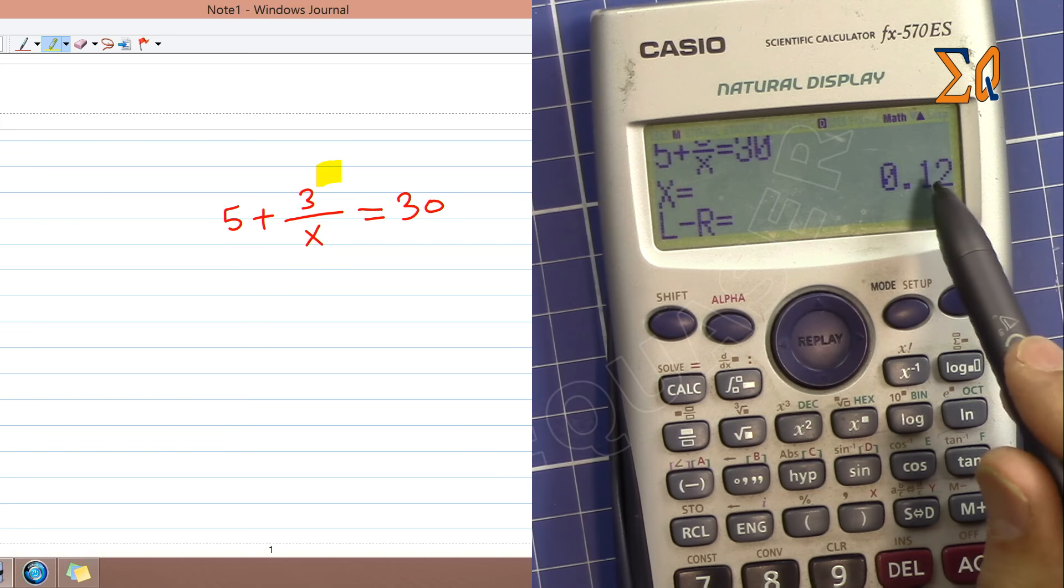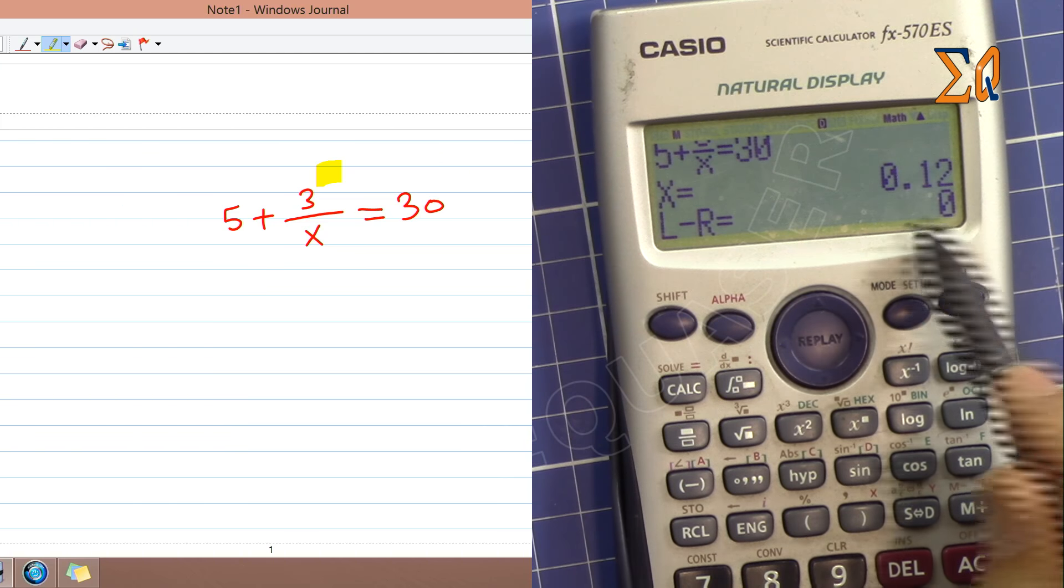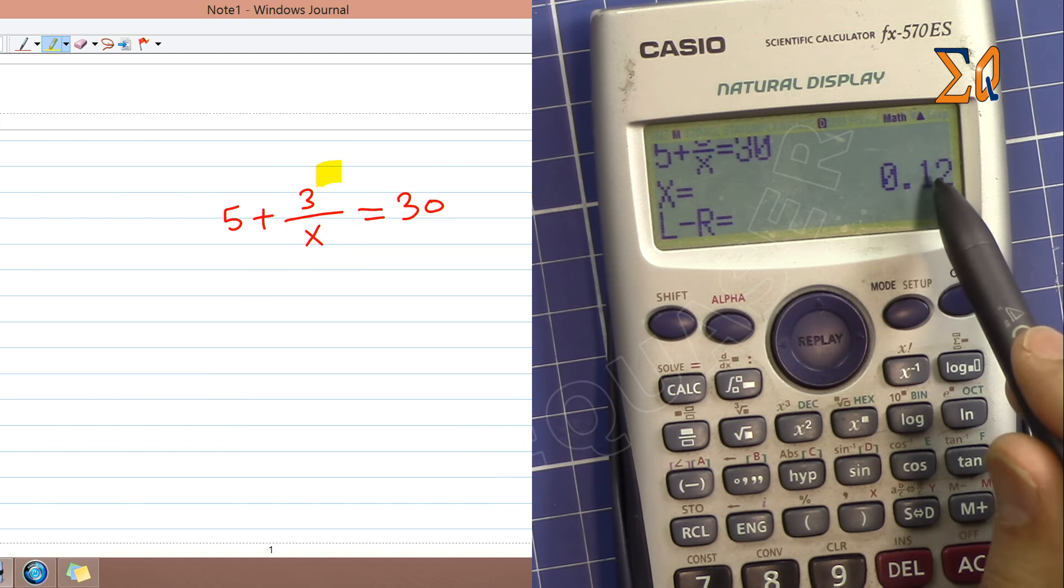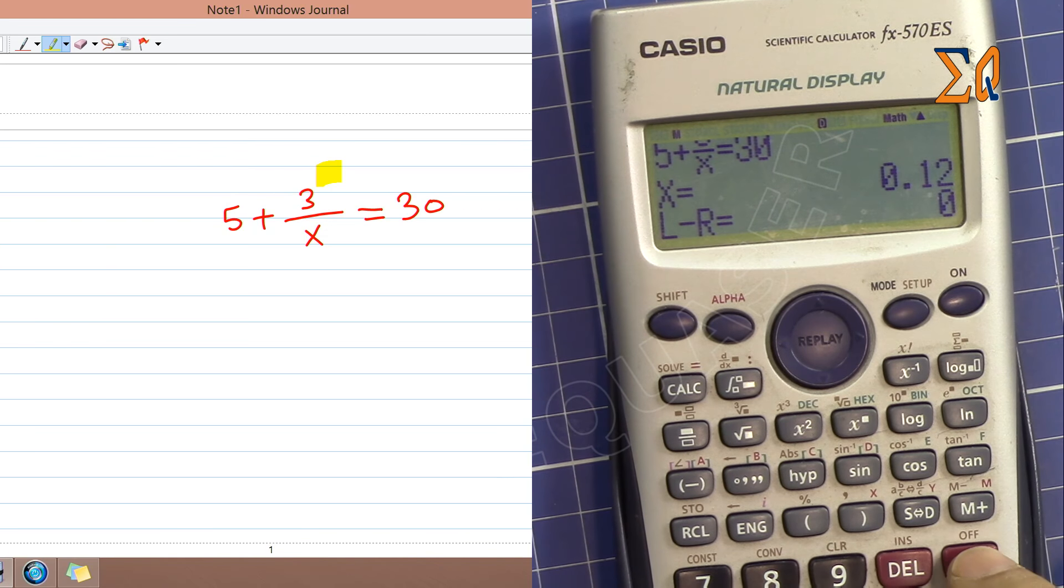But if you see some value, the bigger this value, the bigger the error in the answer. So this is absolutely true, there is no error at all.